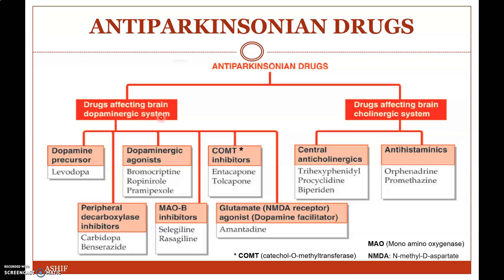Drugs affecting the brain dopaminergic system are classified into: dopamine precursors like levodopa; peripheral decarboxylase inhibitors like carbidopa and benserazide; dopaminergic agonists like bromocriptine, ropinirole, and pramipexole; MAO-B inhibitors like selegiline and rasagiline; COMT inhibitors like entacapone and tolcapone; and glutamate or NMDA receptor antagonists like amantadine.